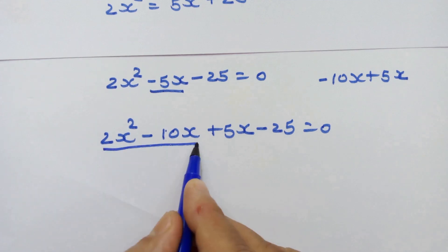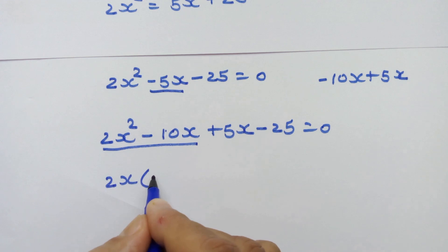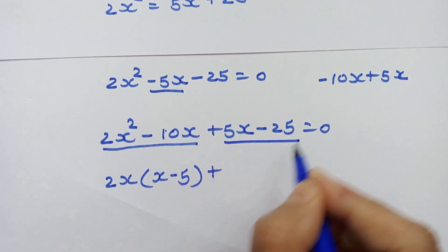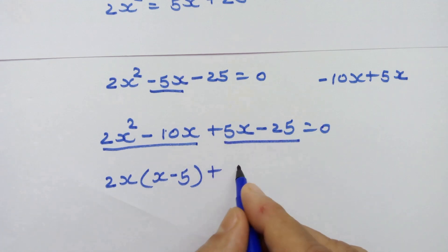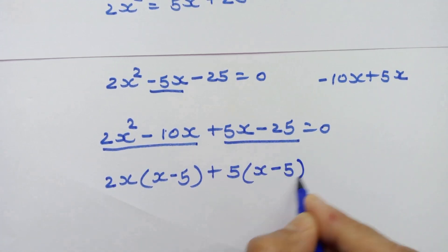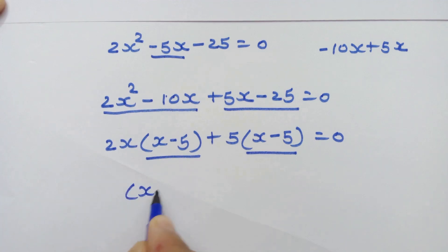Now from this part we will take 2x common: 2x(x-5). And from this part we will take 5 common: 5(x-5) = 0. By taking (x-5) common, we will have (x-5)(2x+5) = 0.